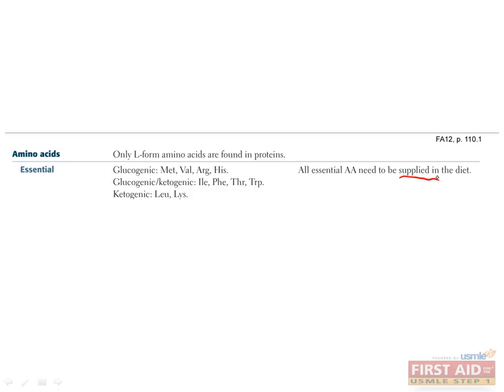The essential amino acids have to be supplied in the diet, since humans can't produce them. The glucogenic essential amino acids, which can be converted to glucose via gluconeogenesis in the liver, are methionine, valine, arginine, and histidine. There are many more non-essential glucogenic amino acids, and the reason they're glucogenic is because they can be used to make either pyruvate or one of the TCA